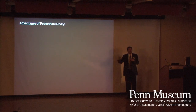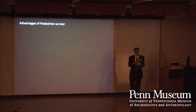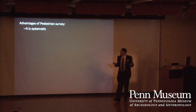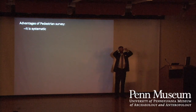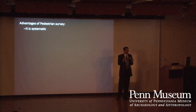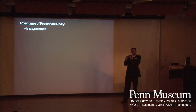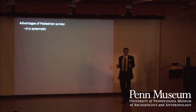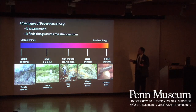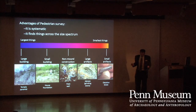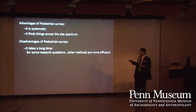Some of the advantages of this kind of transect-type fishbone survey is that it's systematic — once you define your survey block, whether a long transect or something wider, you find just about everything there. You've got a pair of human eyes on almost every square meter of that area, which leads to another advantage: it finds things across the full size spectrum, including the smallest things you can find. A disadvantage is that it takes a long time.